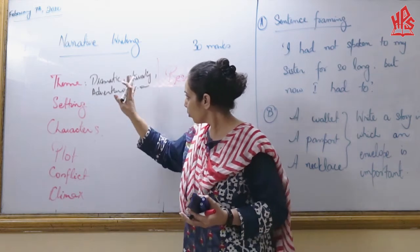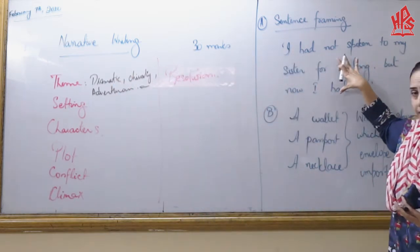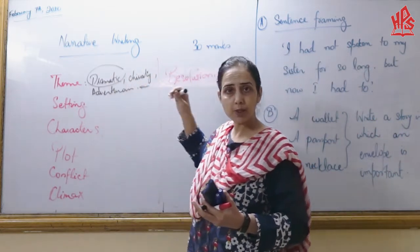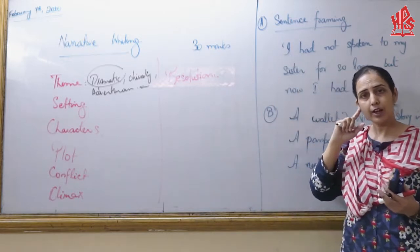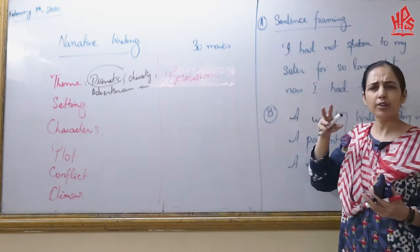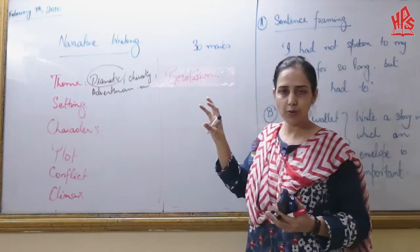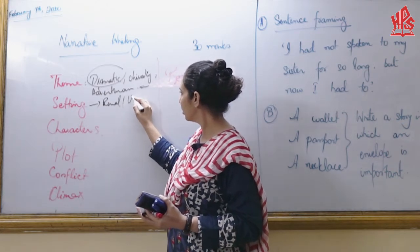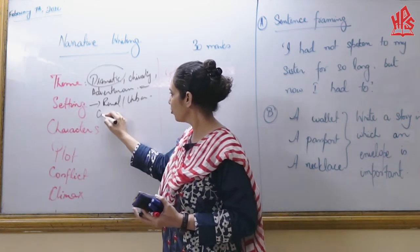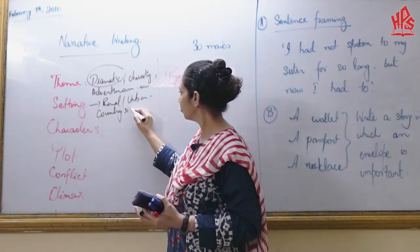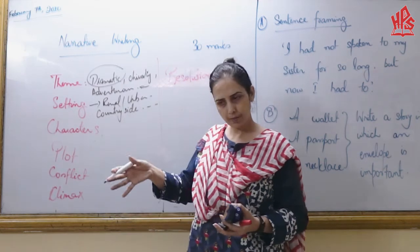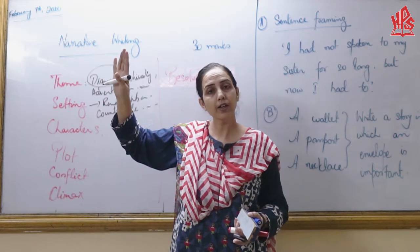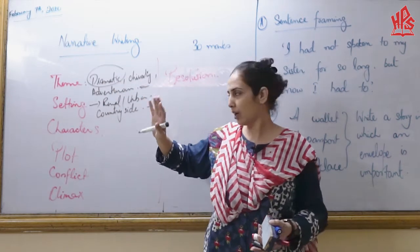Now if I look into this sentence framing, the first thing that clicks to my mind is that there should be something emotional in it. Because you have not spoken to your sister for so long, and now there is some chance that you are going to speak — there could be a family drama, there could be emotion. You could set this in a rural, urban, or countryside setting, or within a local span, or the sister could be living abroad.